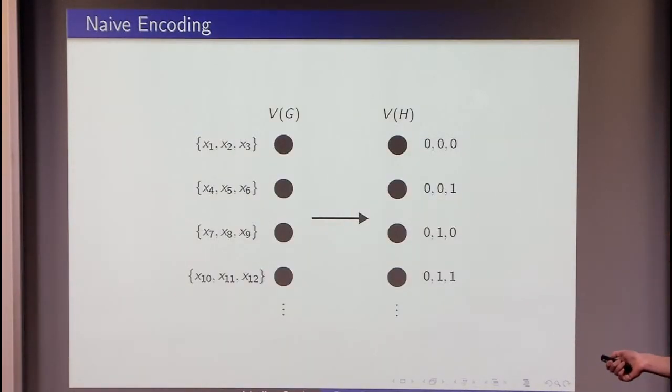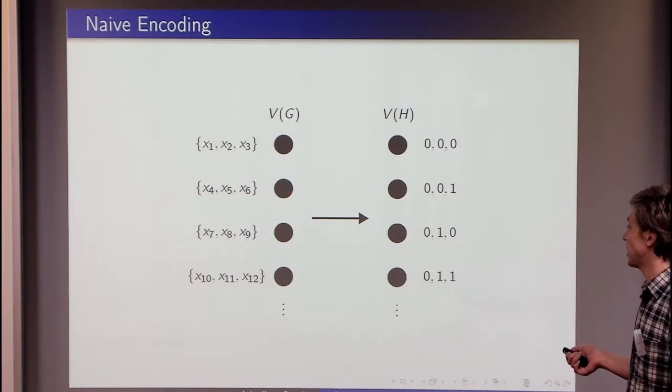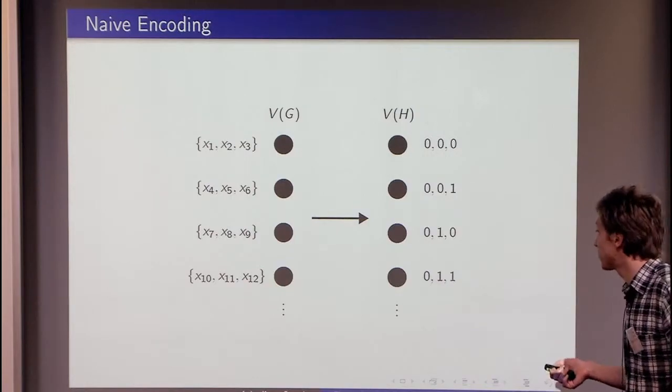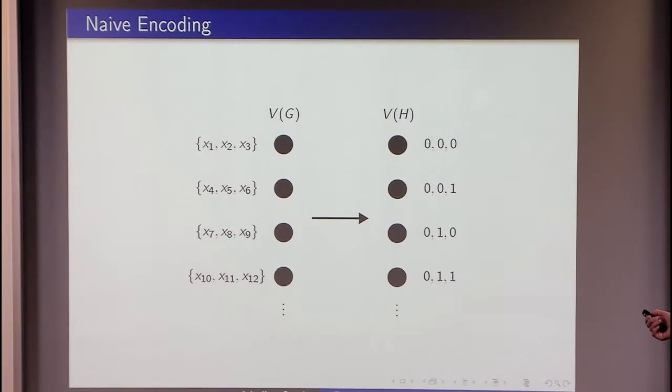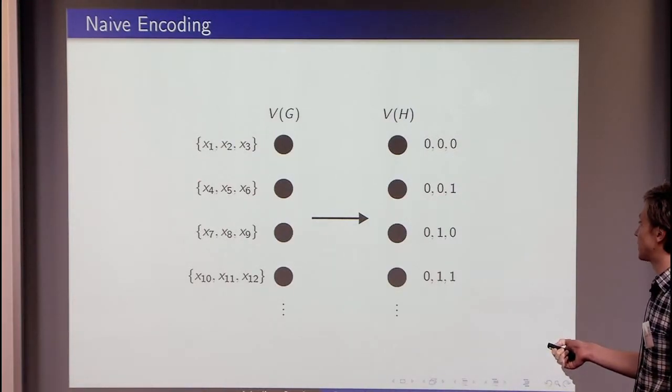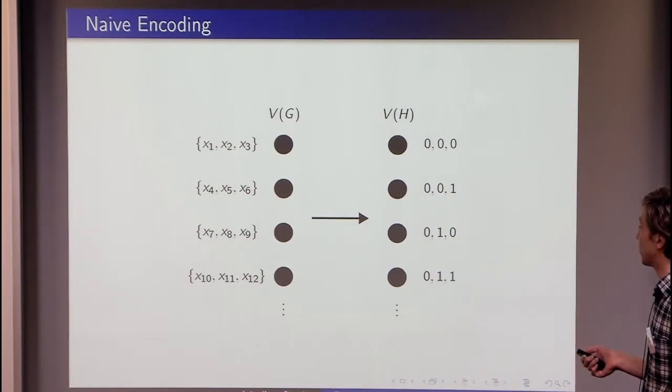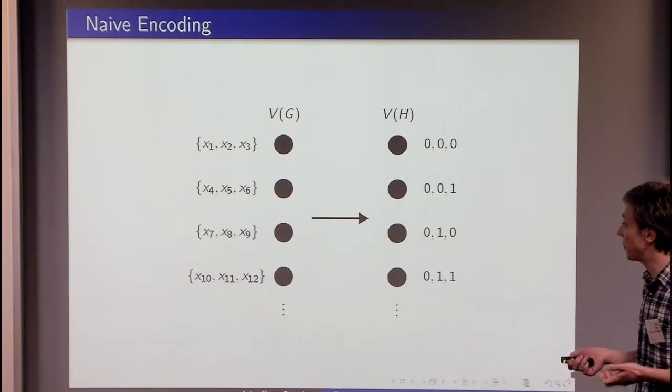How we can tackle such a problem? We can start from taking, let's say, variables of our SAT formula and packing them into packs of logarithmic size and assigning those packs to the vertices of the graph G. We can then consider vertices of the graph H as valuations of those packs. And if we have a mapping such that, for example, this vertex is coming to this evaluation, then it stands for that X4 is equal to 0, X5 is equal to 1, and X6 is equal to 0. What is the problem, the most basic problem with this approach?